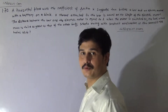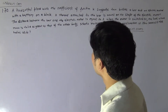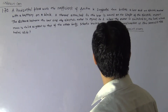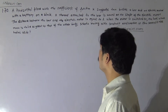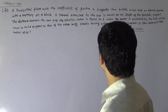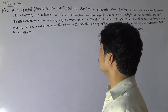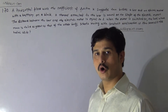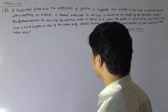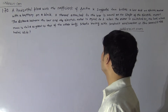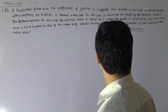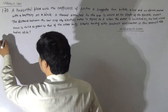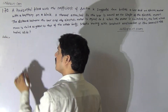Hello students, this is problem 1.7. A horizontal plane with the coefficient of friction k supports two bodies: a bar and an electrical motor with a battery on the block. A thread attached to the bar is wound on the shaft of the electrical motor. The distance between the bar and the electrical motor is equal to l. When the motor is switched on, the bar whose mass is twice as great as that of the other body starts moving with constant acceleration w. How soon will the bodies collide?